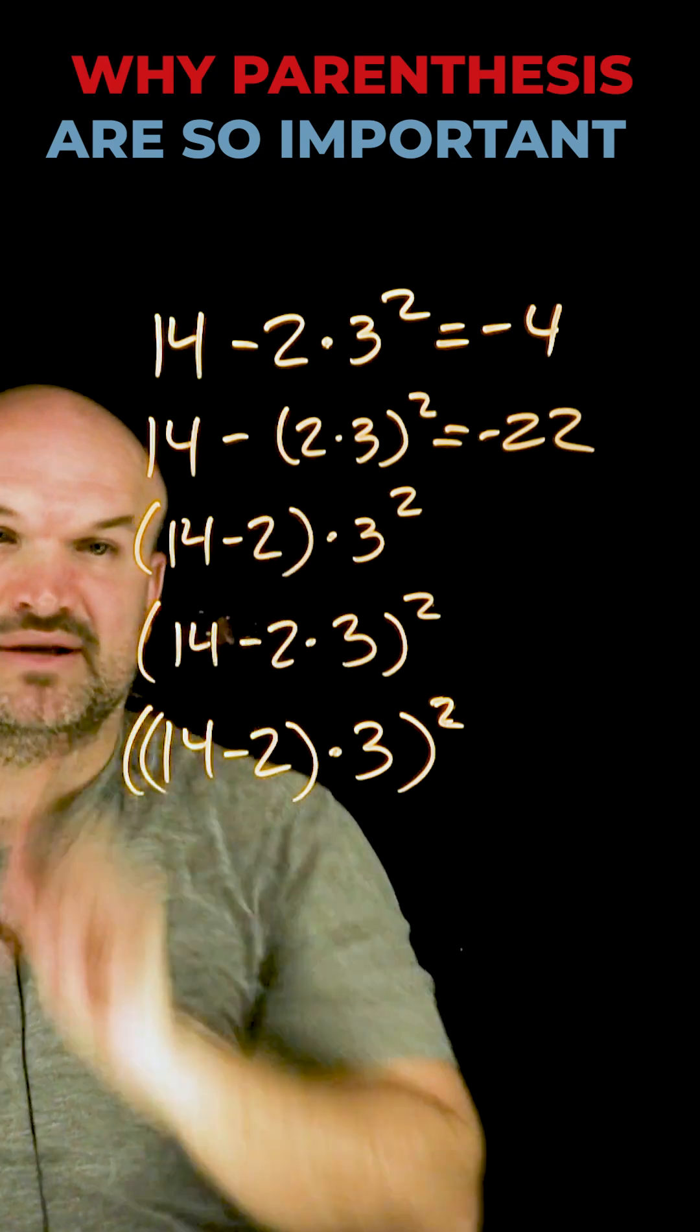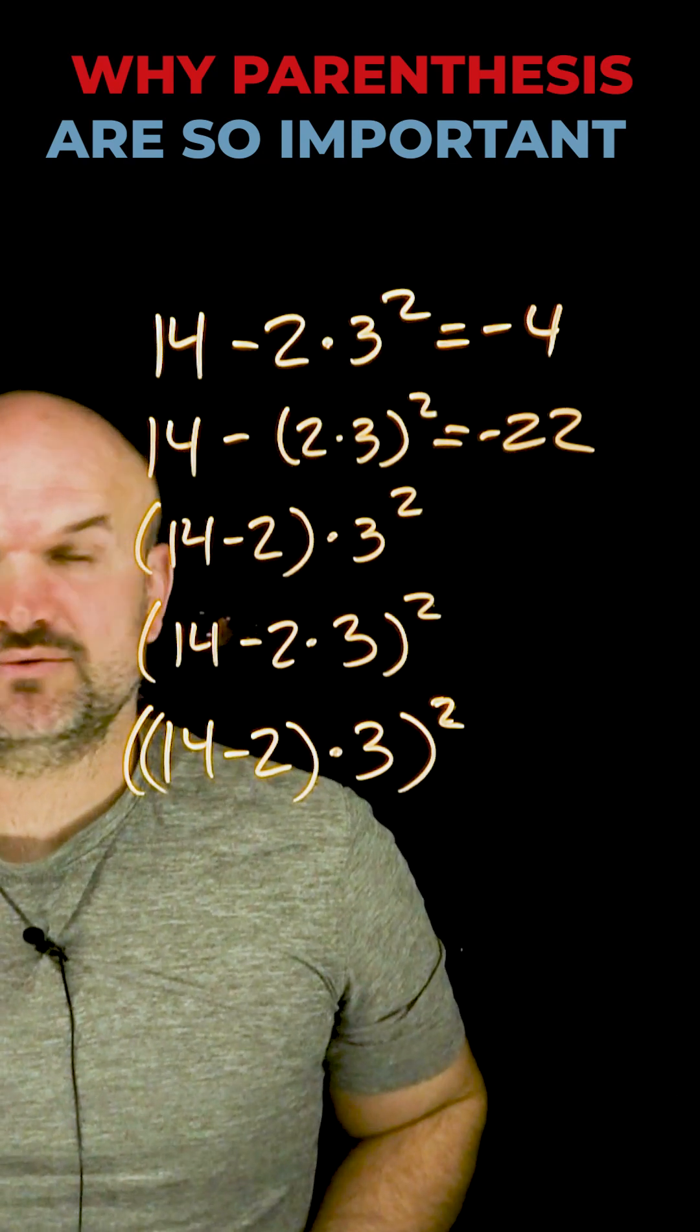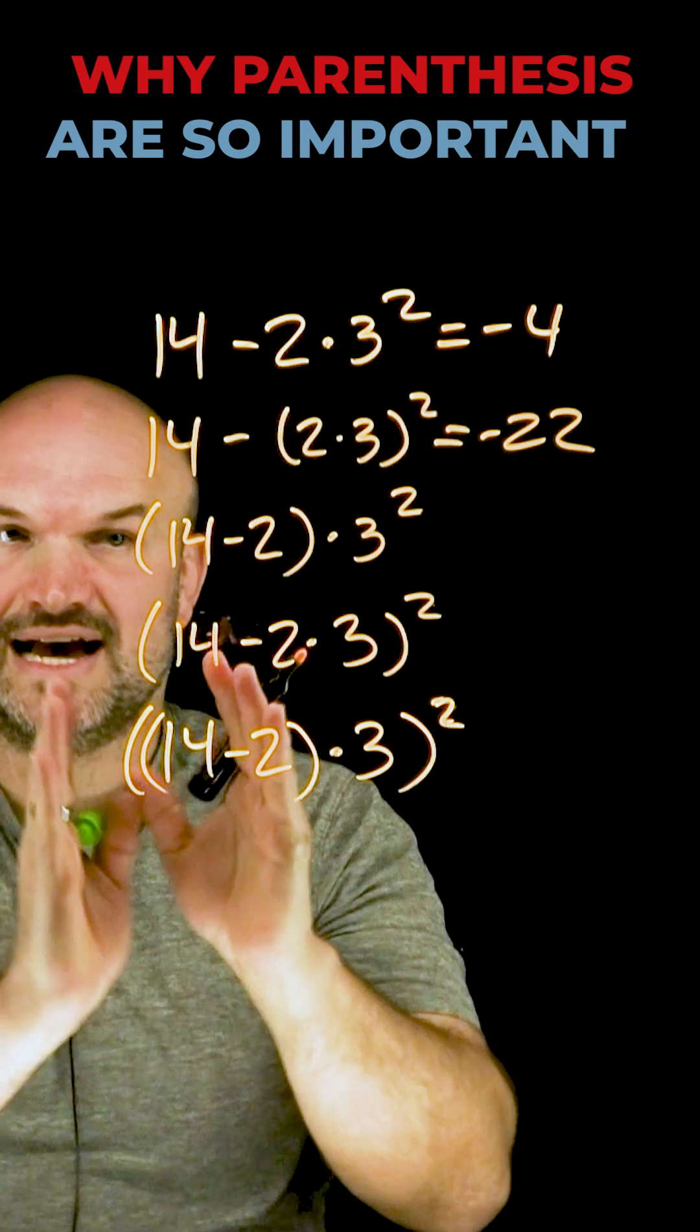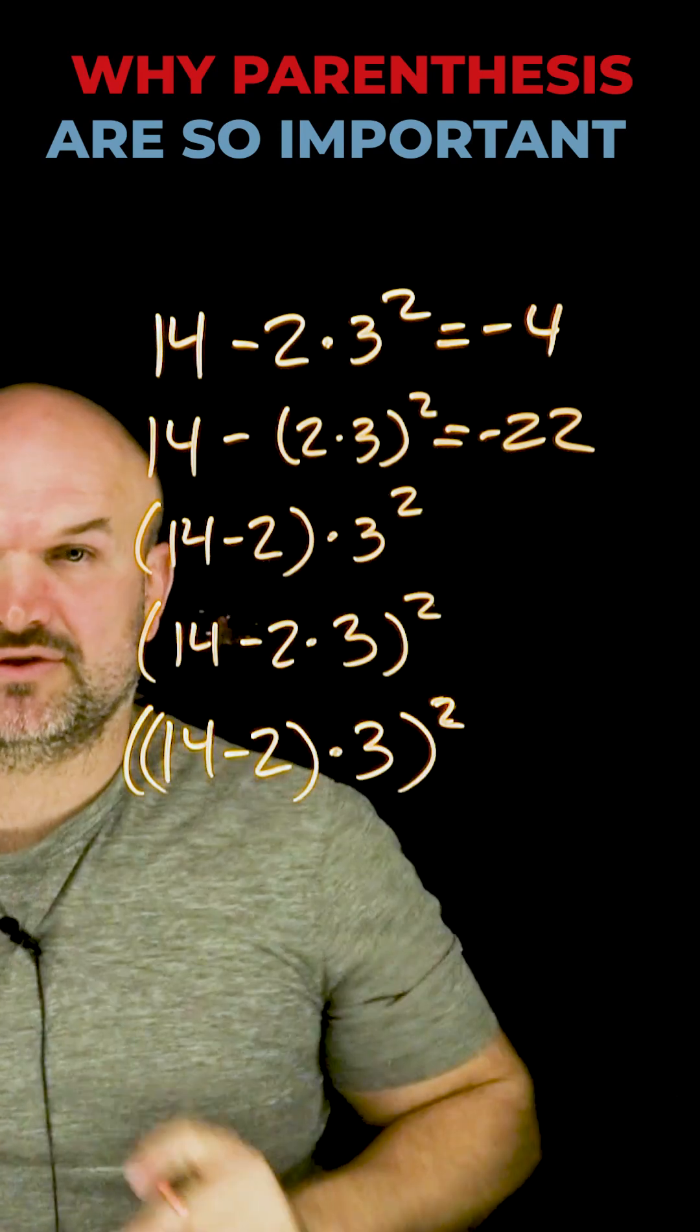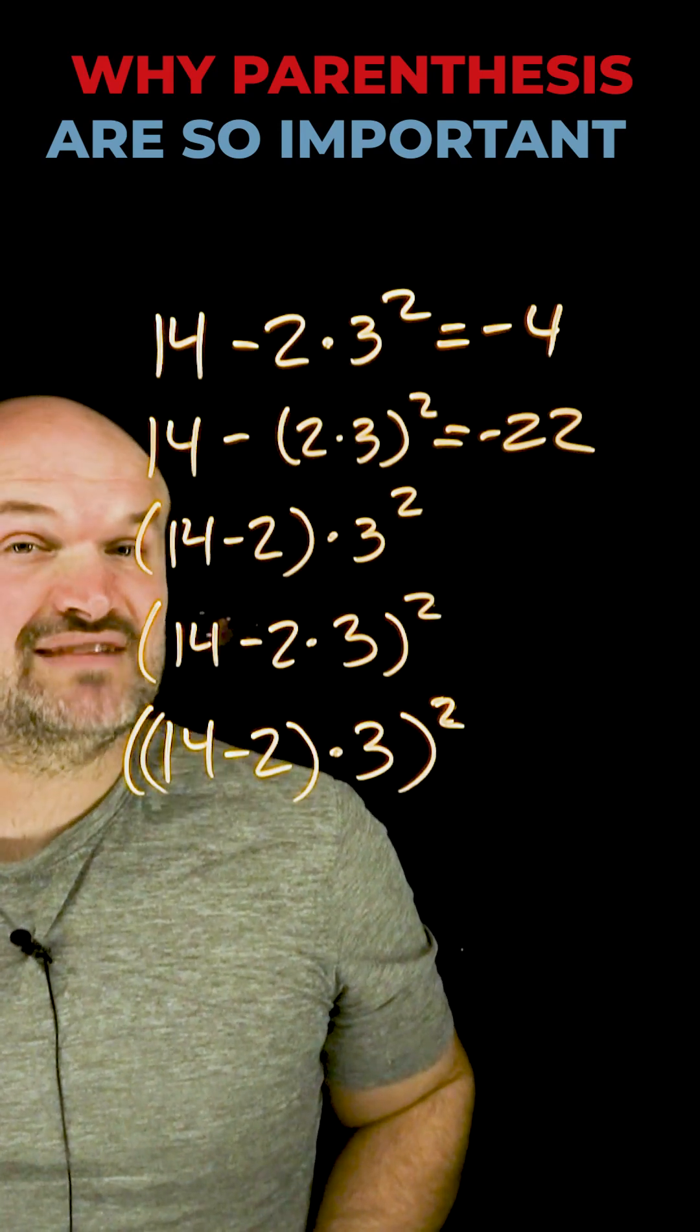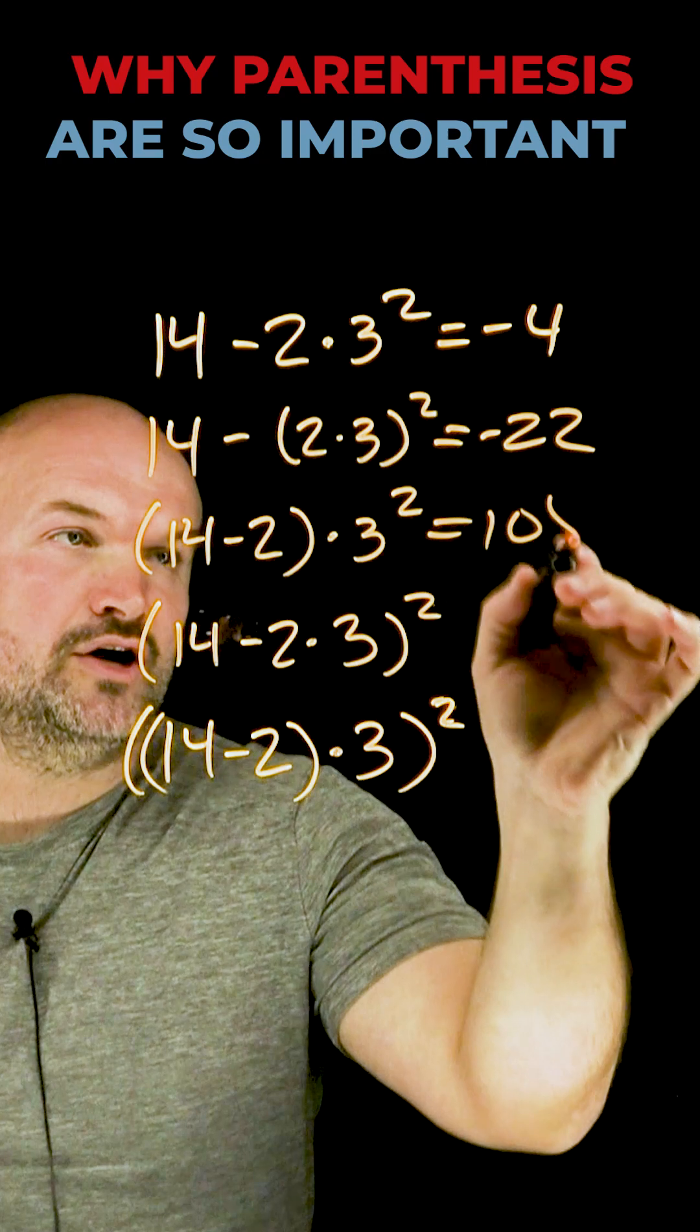Now in this case, we have the parentheses around the 14 and two. So I subtract them: 14 minus two is 12. Now I have 12 times three squared. So I need to square the three first, which is nine. 12 times nine equals 108.